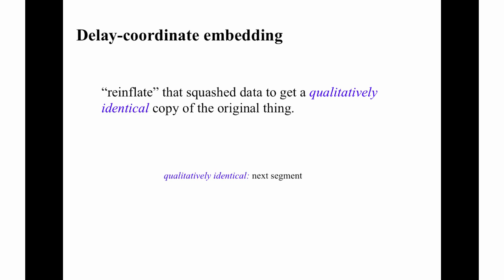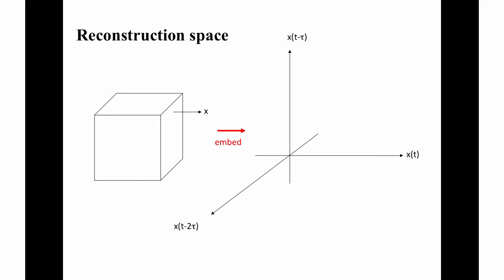With a technique called delay coordinate embedding. I'll explain the mechanics first, and then circle back around to the underlying theory. The basic idea is that you plot the data against delayed versions of itself. So you're working in this new space called reconstruction space, and it has as many axes as you choose.